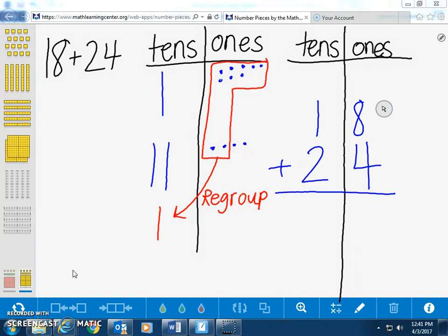Now, how would that look on the algorithm? We will add the 1s place first. So, 8 1s plus 4 1s equals 12 1s.